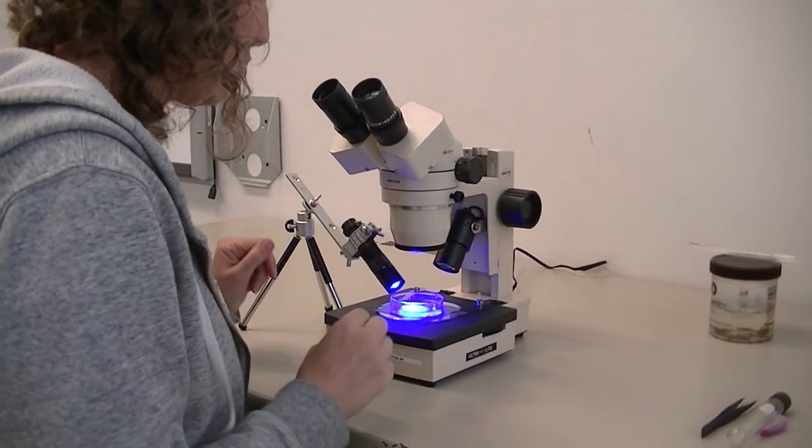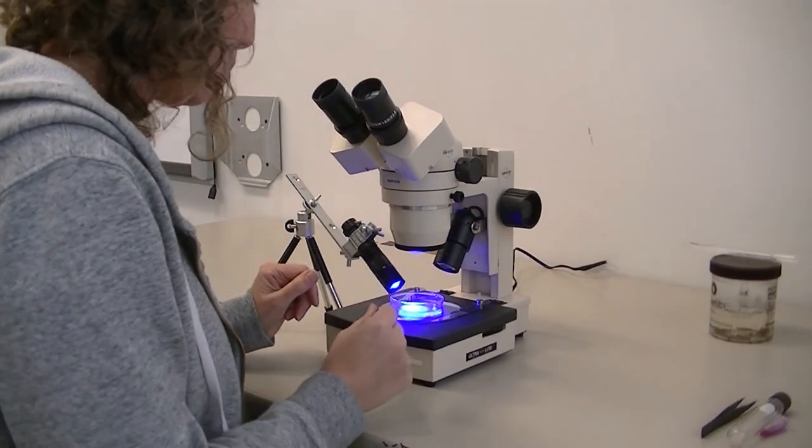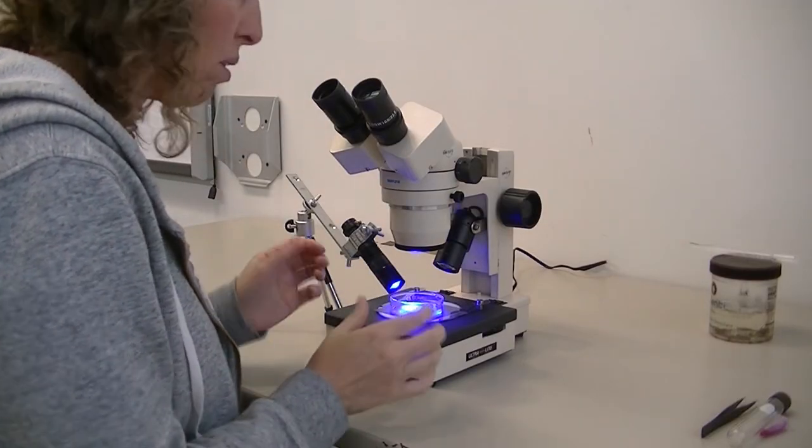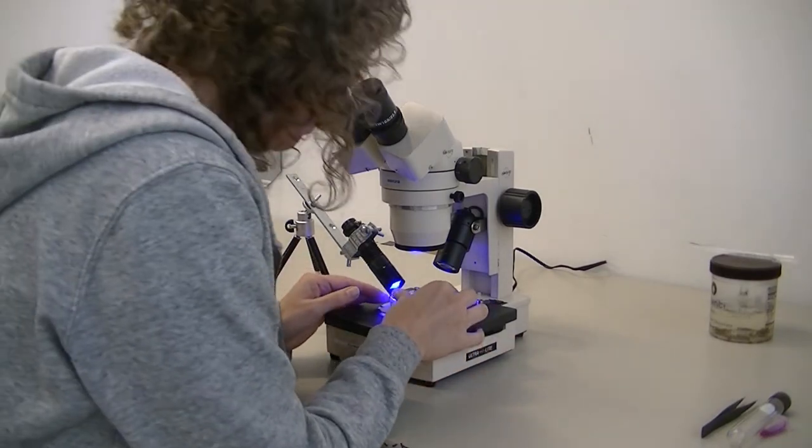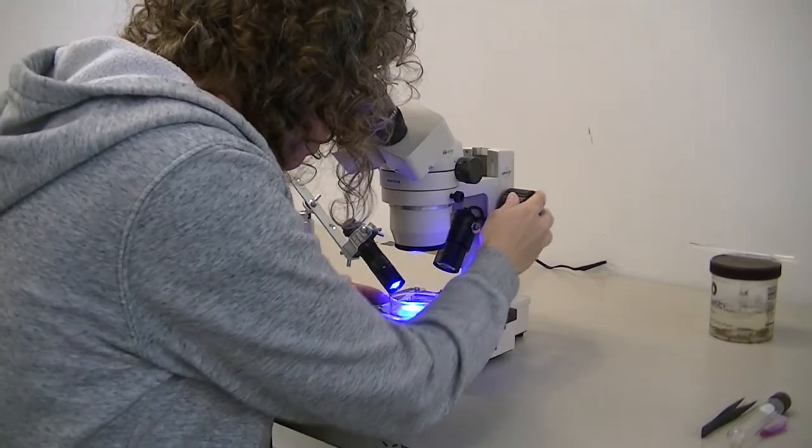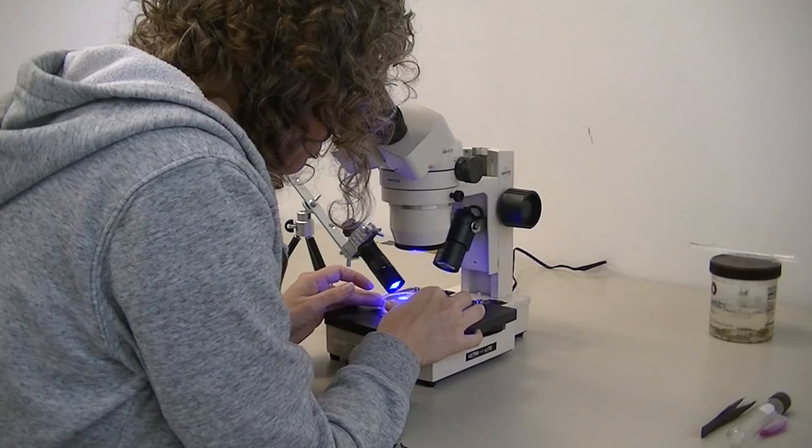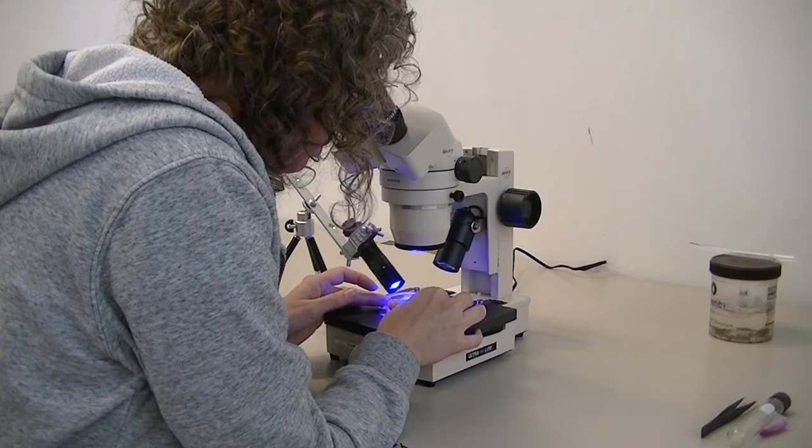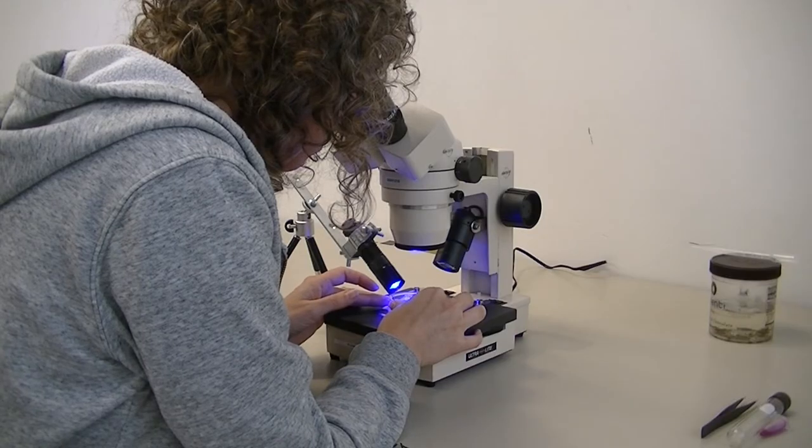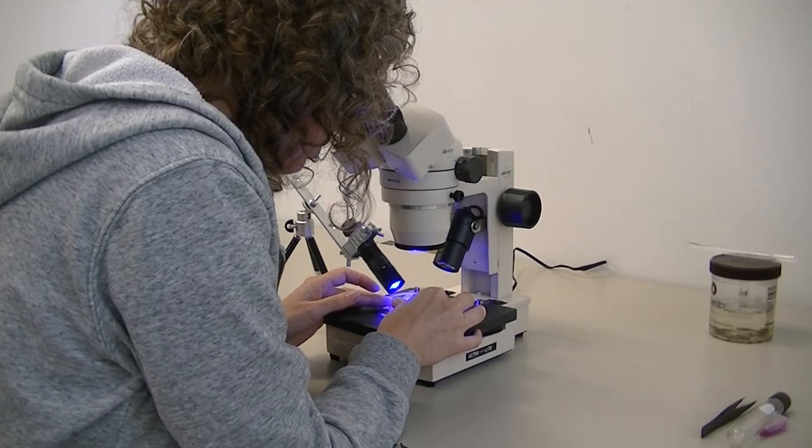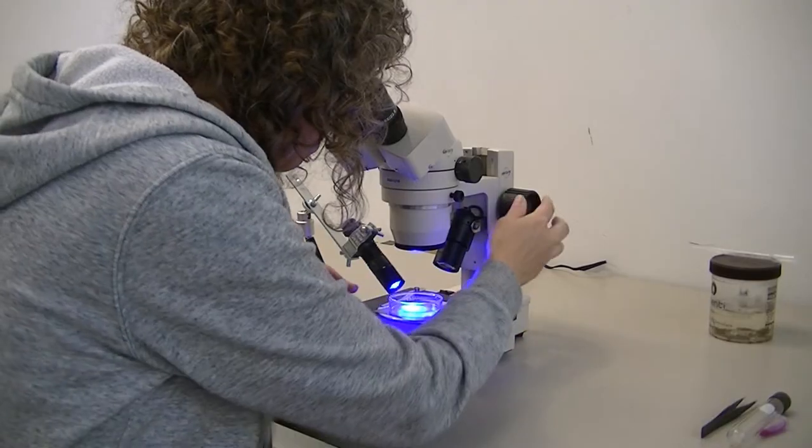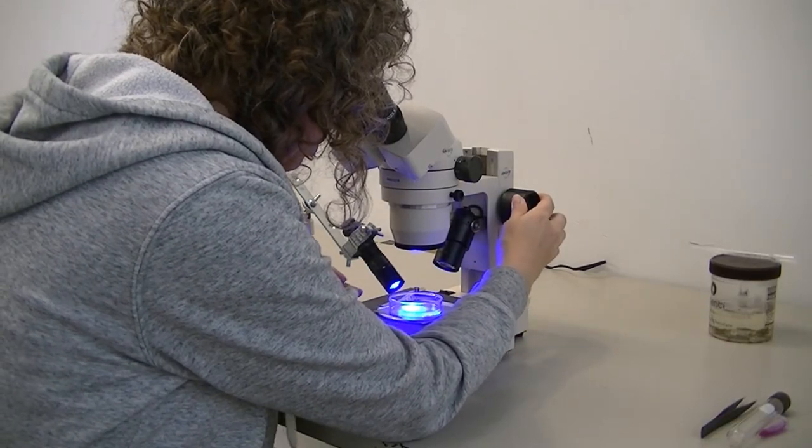You're going to start by examining the sample under fluorescence using the lawnmower technique described in the plankton manual. I've found our control sample, which is nicely red.